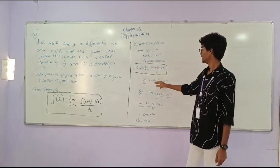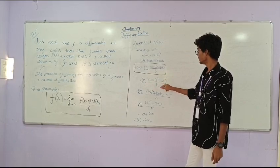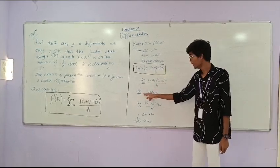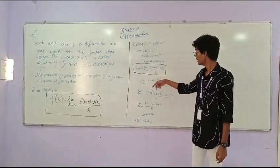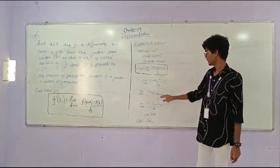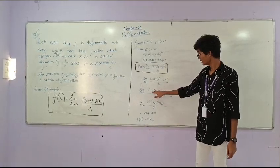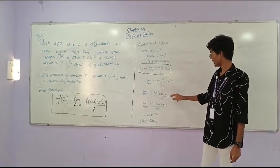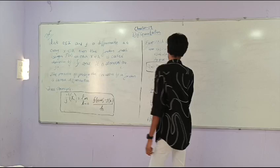Limit h tends to zero, x plus h whole squared minus x squared by h. Limit h tends to zero, now apply a plus b whole square formula in x plus h whole squared. a squared plus b squared plus 2ab, so it becomes x squared plus h squared plus 2xh minus x squared. x squared and x squared cancel.